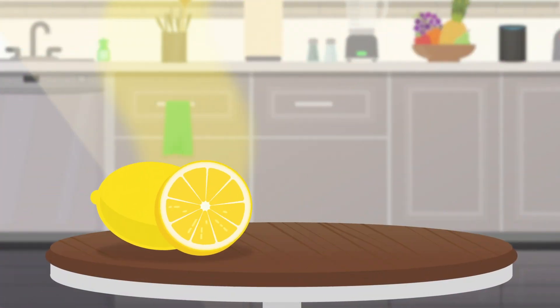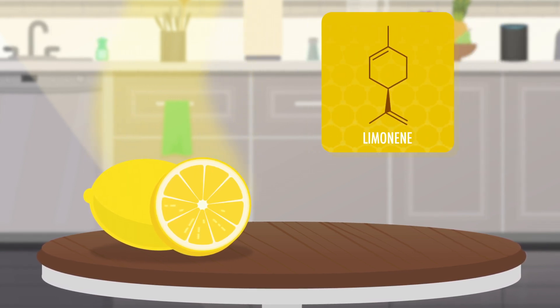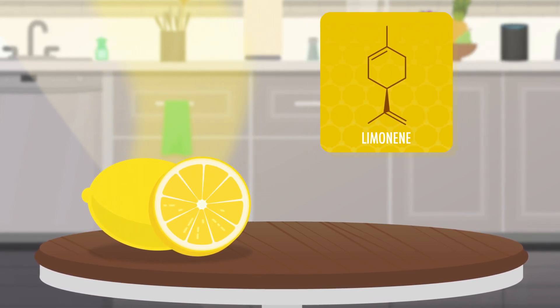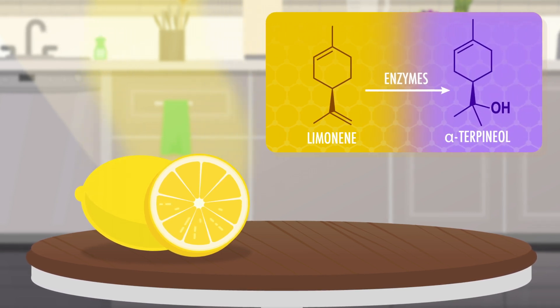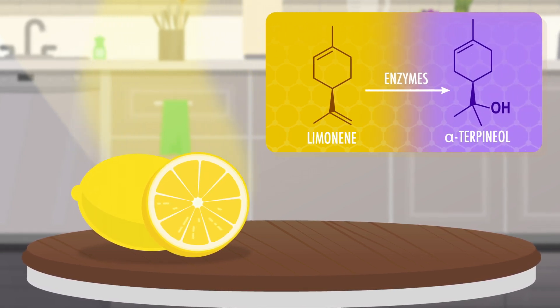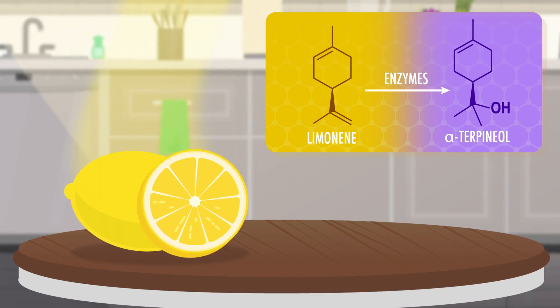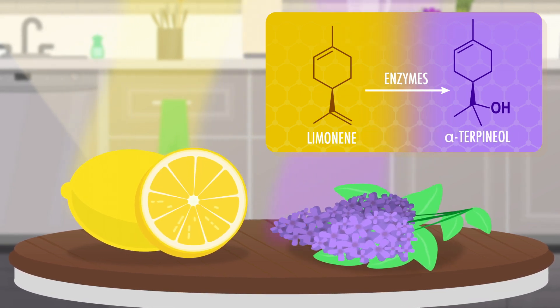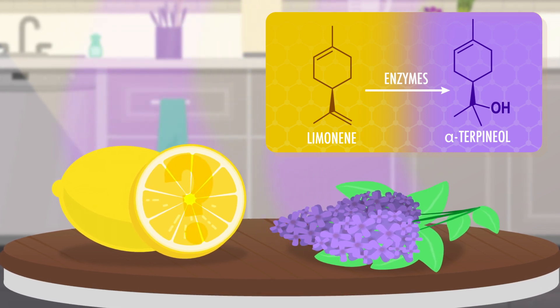Take lemons, for example. A major component of that bright, lemony smell is limonene. Limonene has two double bonds in its structure, and enzymes can catalyze a reaction to make just one of them add a water molecule. The product of this enzyme-catalyzed reaction, called alpha-terpineol, smells like lilacs instead. So how do reactions like these happen, and why don't lemons smell like lilacs if you leave them out for a while?